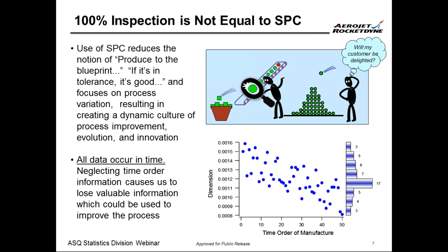We also need to keep in mind that all data occur in time and neglecting the time-order information causes us to lose valuable information which could be used to improve the process. For example, if you just view a histogram, everything looks fine. But the same data, if you plot in some kind of time order, it shows a trend. And this trend might be good or bad depending on the process and the characteristics you are studying.